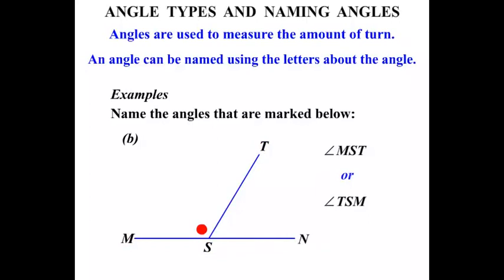Now let's bring back the rest of the diagram. We can't call this one just Angle S, because at point S there are two possible angles. Which one would be Angle S — this one or that one? There's confusion, and no one can be sure. So in this case we could not call it Angle S by itself.